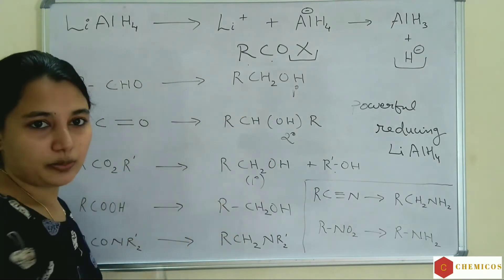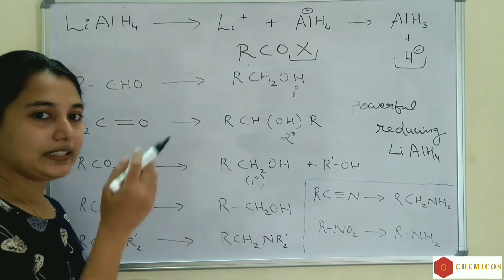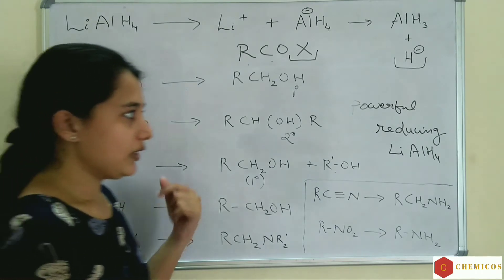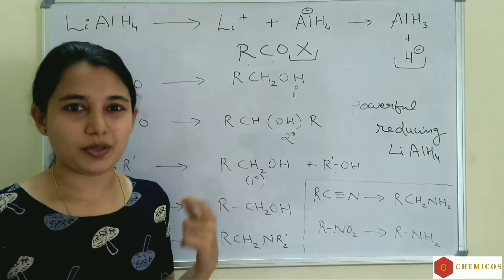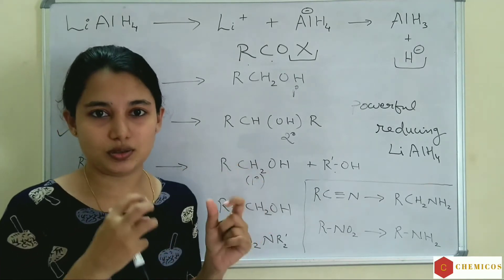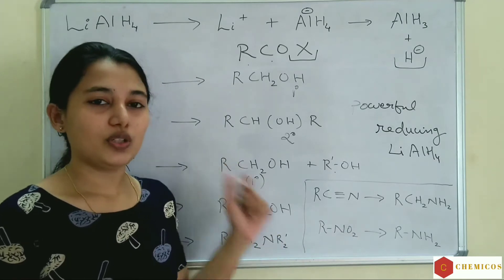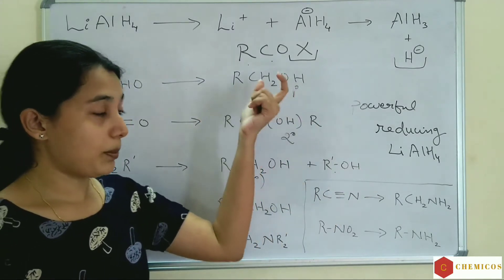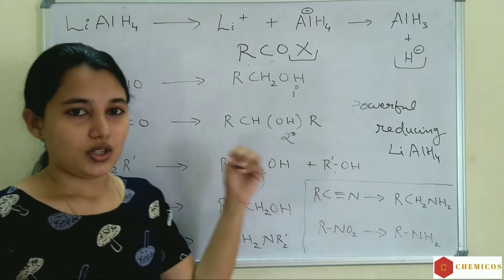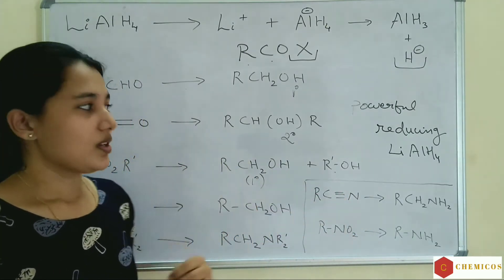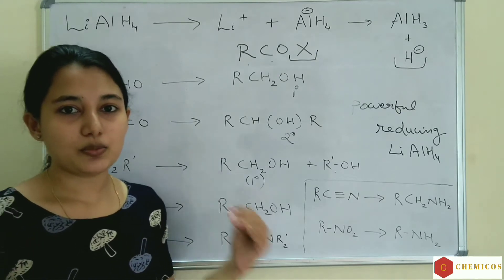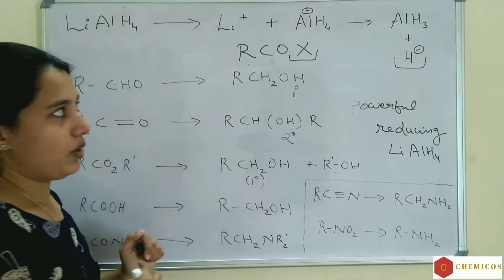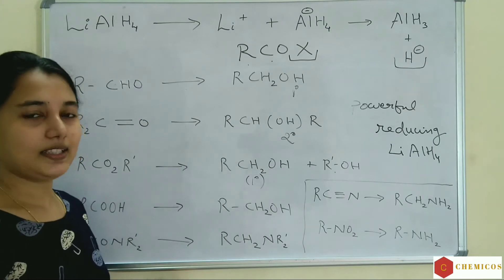When comparing lithium aluminum hydride and sodium borohydride, lithium aluminum hydride is the more powerful reducing agent. In laboratories, when we want a particular compound through selective reduction, we use sodium borohydride instead of lithium aluminum hydride, because sodium borohydride is more chemoselective — meaning it reduces or attacks only a particular functional group.